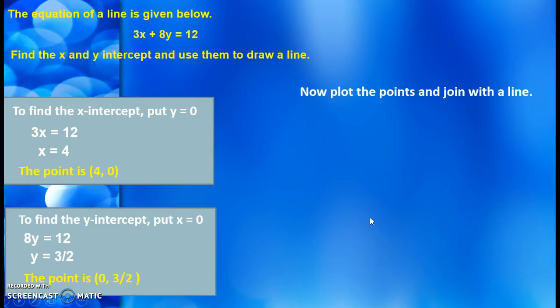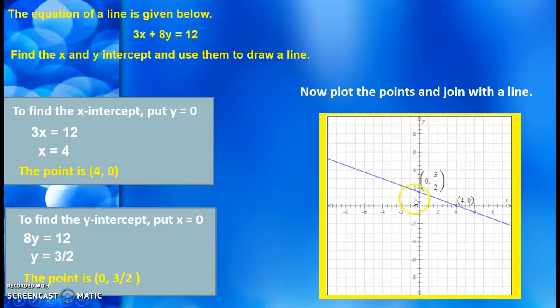If I have two points, I can draw the line. I plot the two points and join them with a straight line. Thank you.